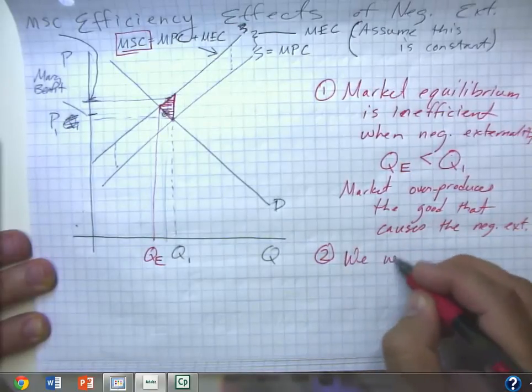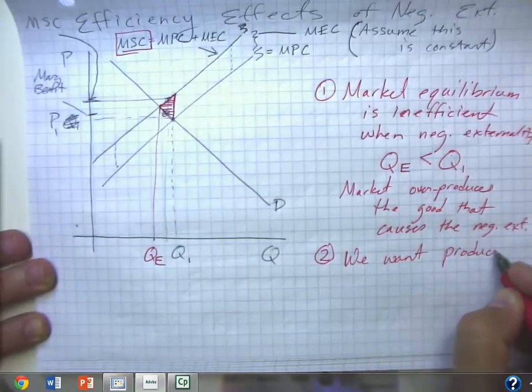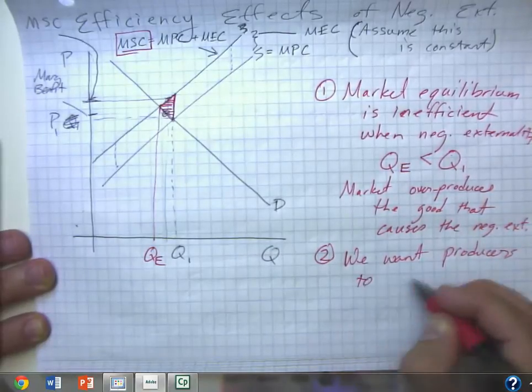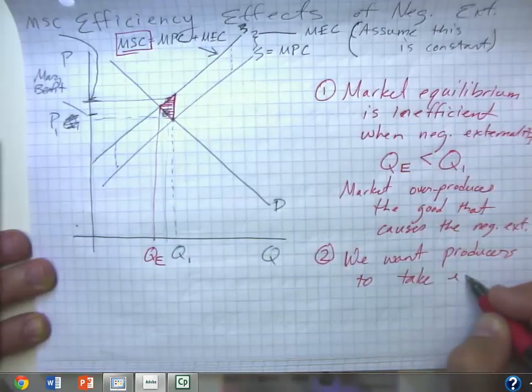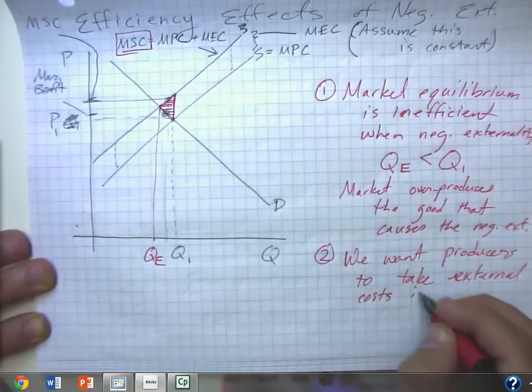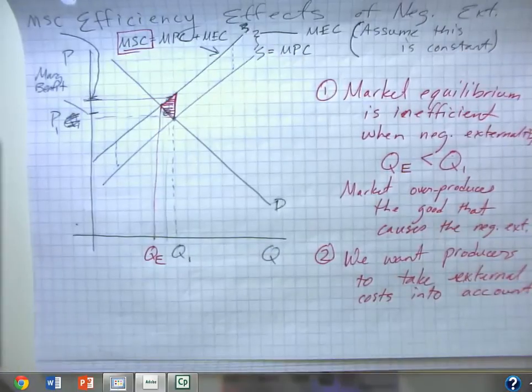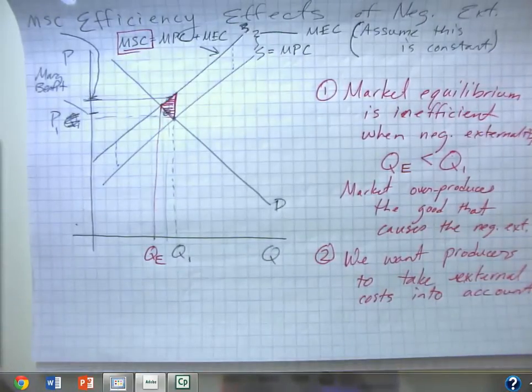So what we need to do is if we want to have an efficient situation, we want producers or sellers to take the external costs into account.